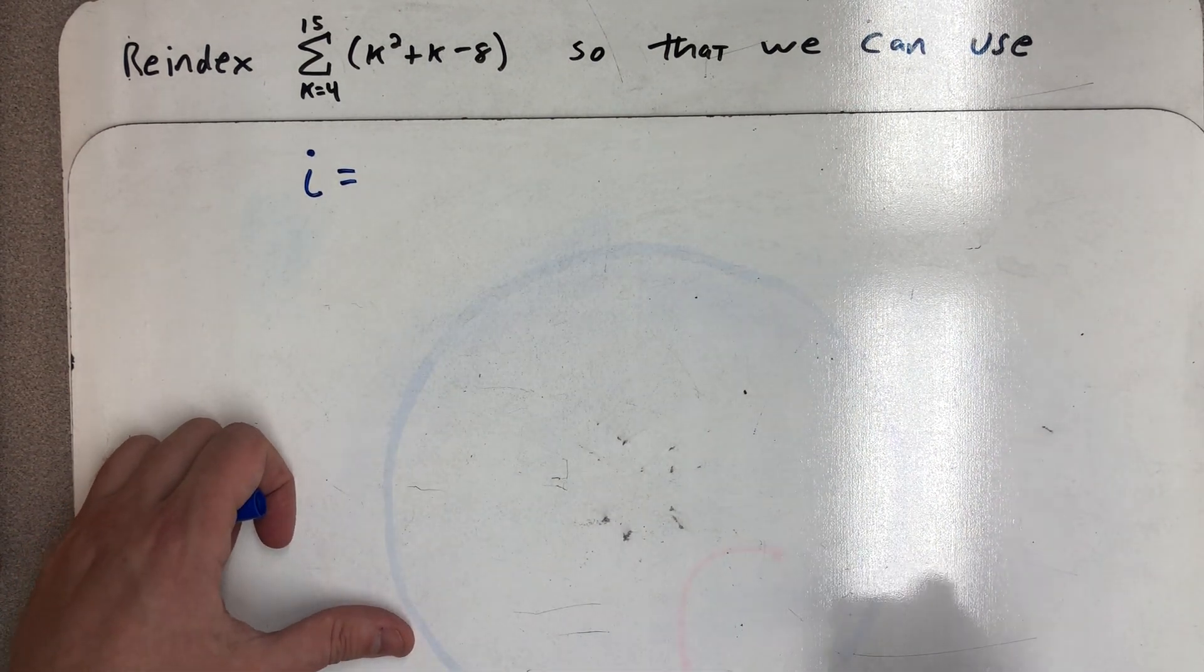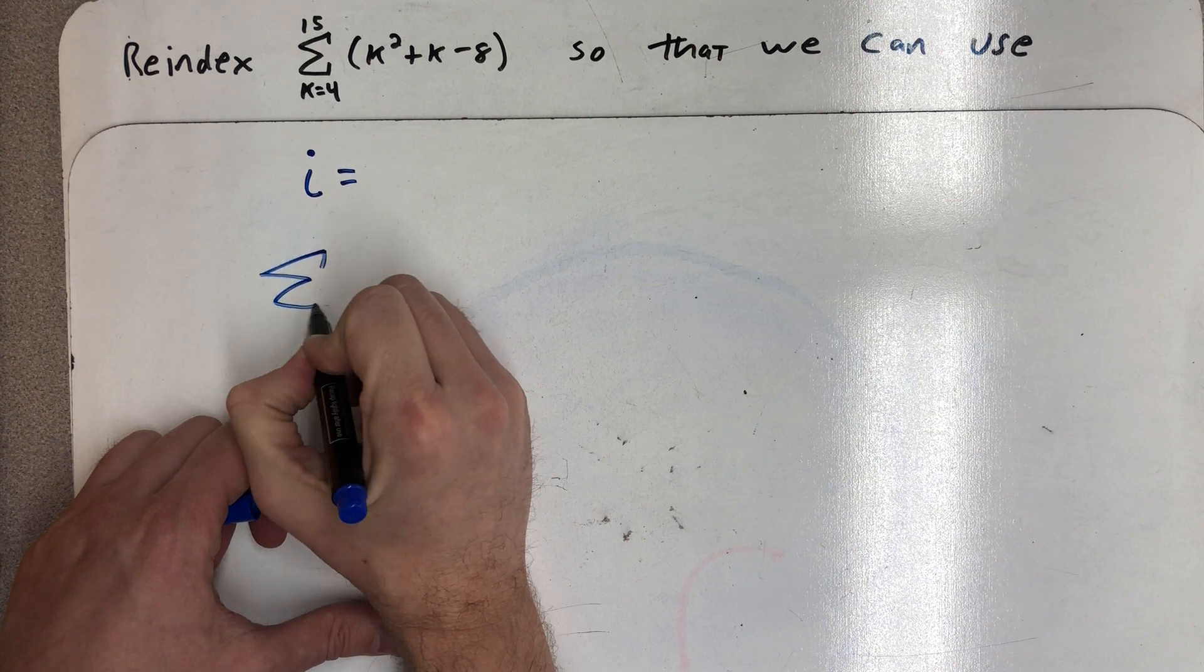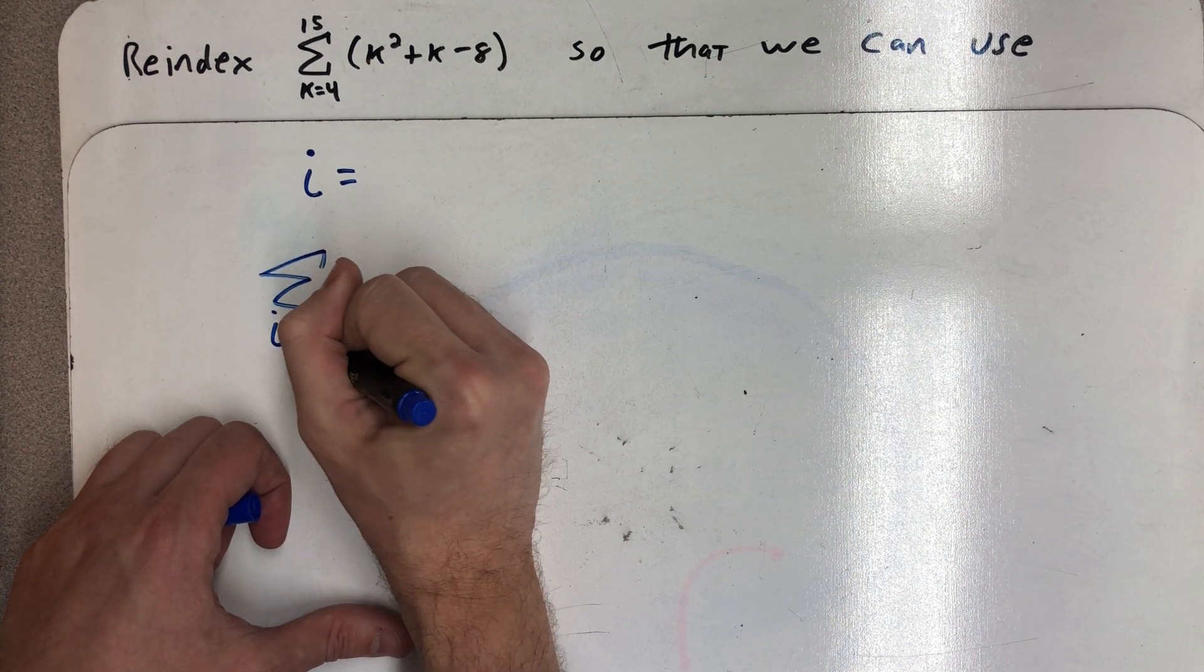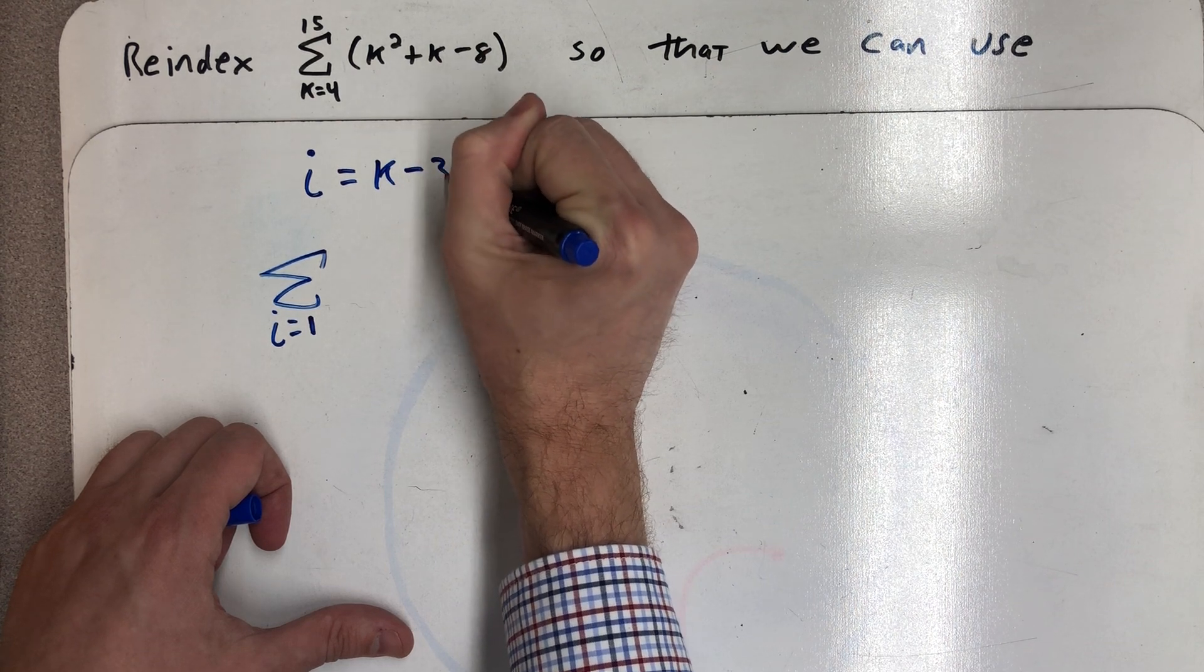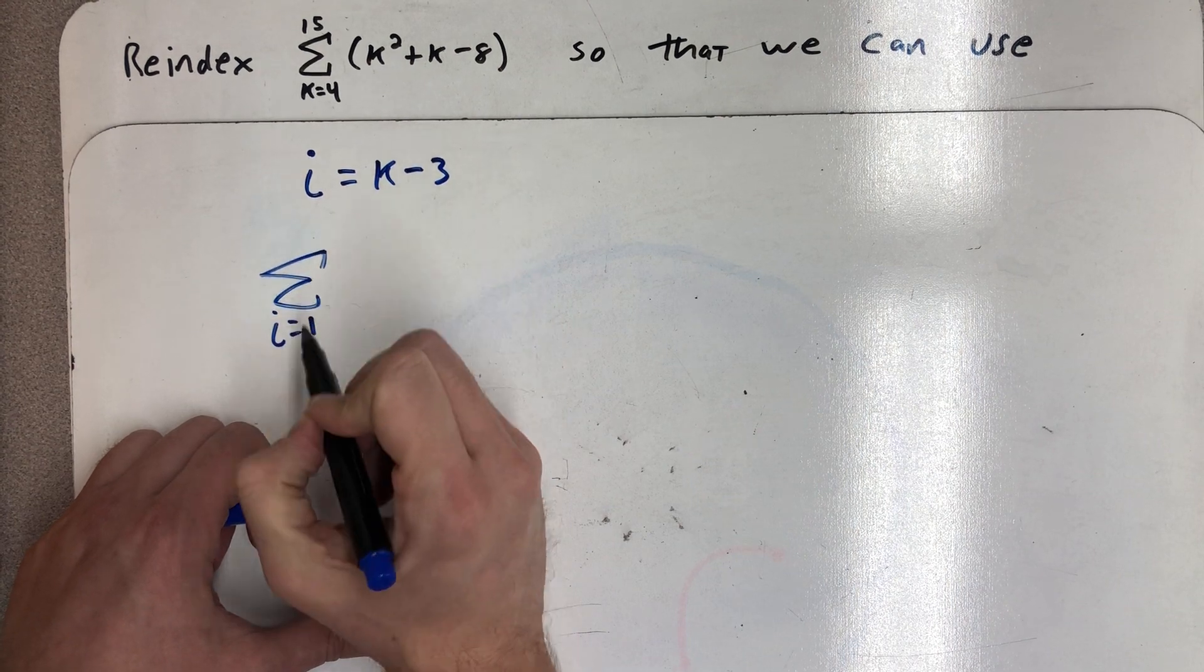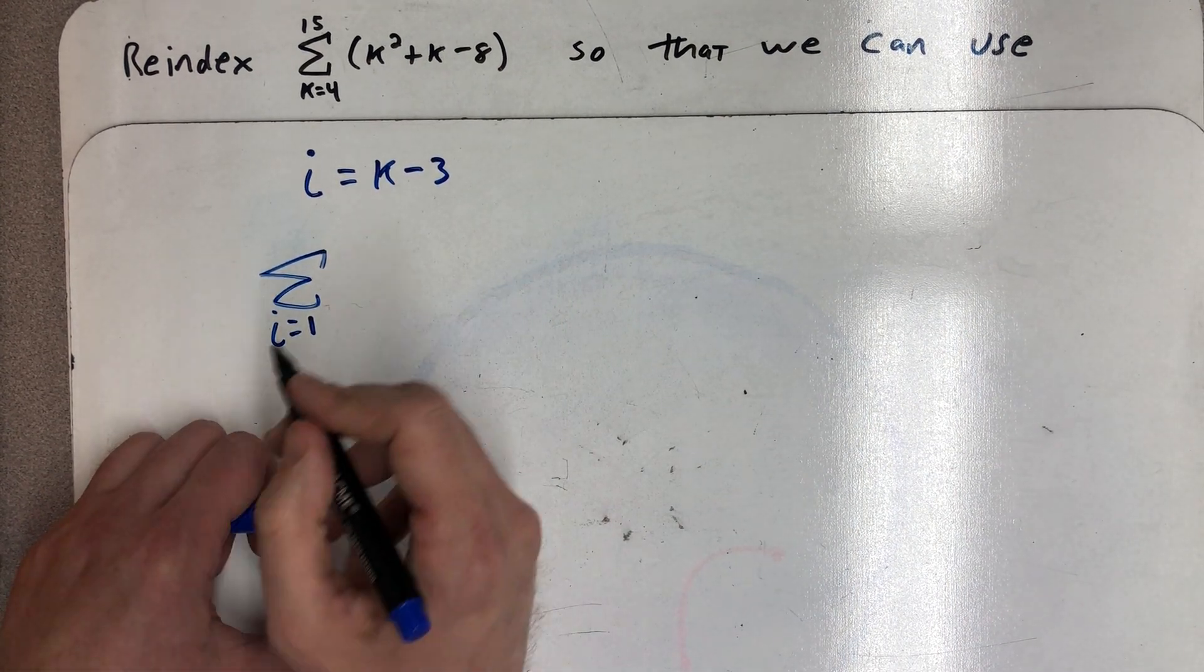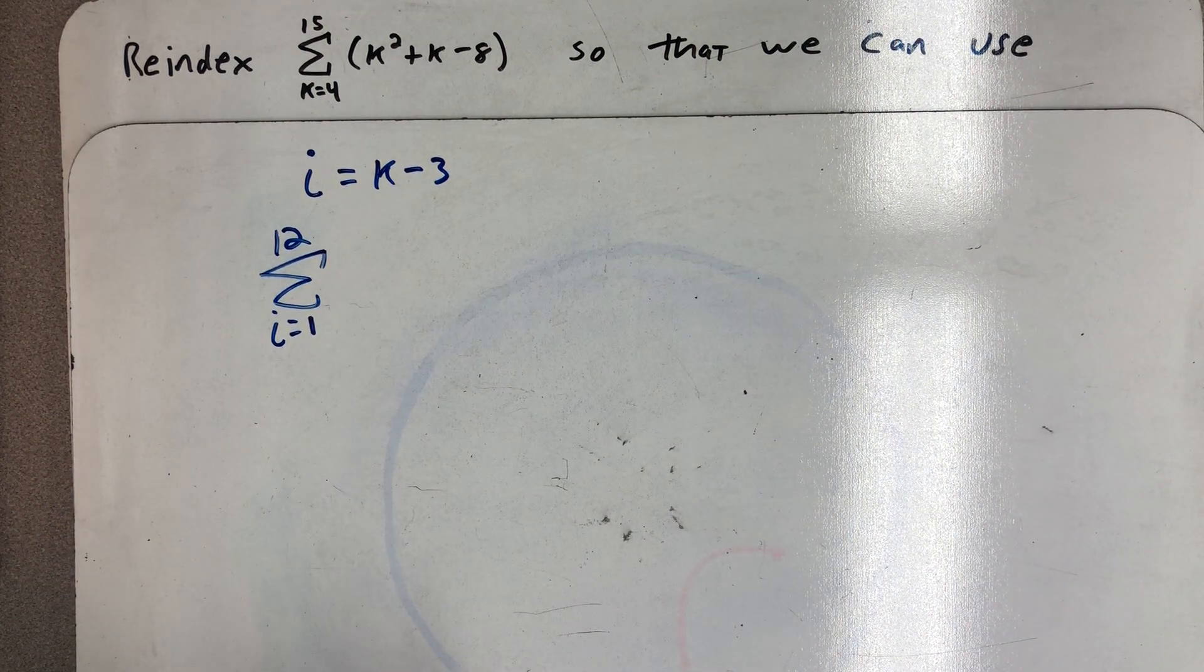I need this new sum to start at 1. I wanted to say i equals 1, and that makes me realize that i is simply all of the k's take 3 away. And so that is a value of k. I plug it in there and now i is 1 when k was 4. When k is 15, i is 12, and so this sum will go from 1 to 12.